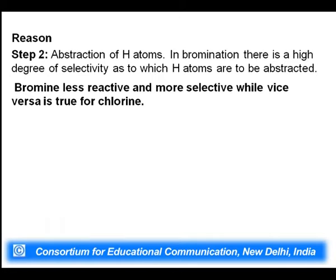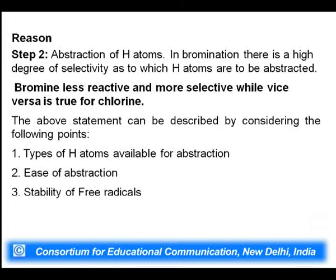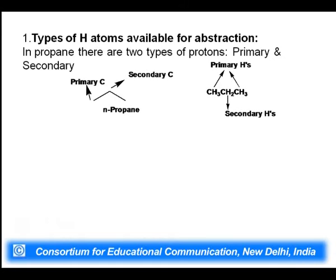The selectivity and reactivity of bromine can be explained by three main reasons. The first reason involves the types of hydrogen atoms available for abstraction. In propane, the terminal carbon atoms are primary carbons (attached to only one other carbon), bearing primary hydrogens. The middle carbon is a secondary carbon (attached to two carbons), bearing secondary hydrogens. Propane has 6 primary hydrogens and 2 secondary hydrogens.